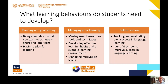What are the learning behaviours we want students to develop to become independent, autonomous learners? We tend to think of three main areas. First is planning and goal setting — understanding what they're trying to do. Then there's managing the learning — the day-to-day organisation of your learning. And the third is self-reflection — thinking about how your learning is going, whether it's successful, what is working and what's not.